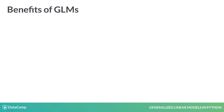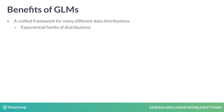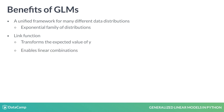Let's summarize the concepts introduced in this video. As you learned in this lecture, the GLMs unify many different types of the response variable, where the distributions belong to the family of exponential densities. The link function transforms the expected value of y and not y itself, and it enables linear combinations, which further provide benefits that many techniques from linear models apply to GLMs as well. We will further see the details of this in later lessons.